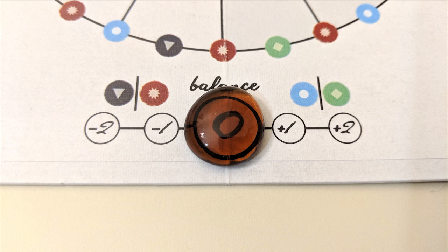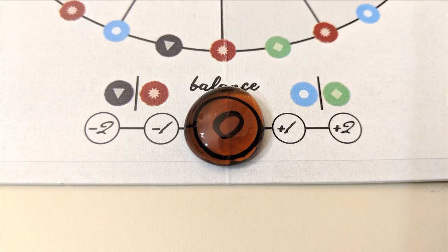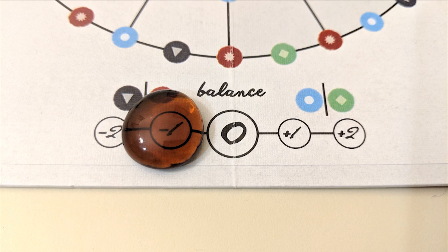Each time you move, you'll need to adjust your balance scale. When the game starts, your balance will be at zero. Each time you move to either a green or blue node, your balance increases by one. And each time you move to either a black or red node, your balance decreases by one.